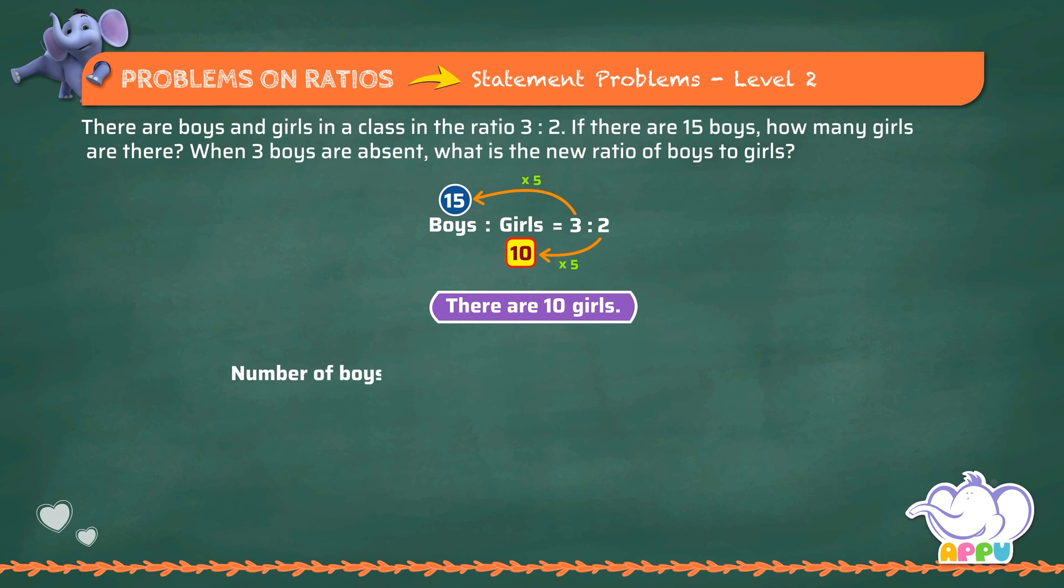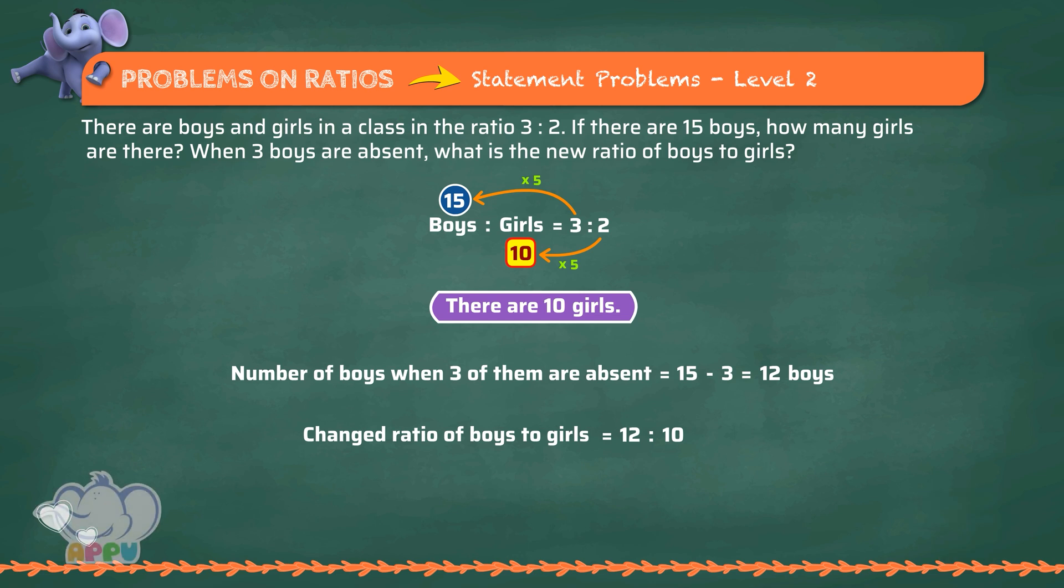Number of boys when 3 of them are absent equals 15 minus 3 equals 12 boys. So, the changed ratio of boys to girls equals 12 is to 10. Since 2 is a common factor, we divide by 2. We get the changed ratio as 6 is to 5.